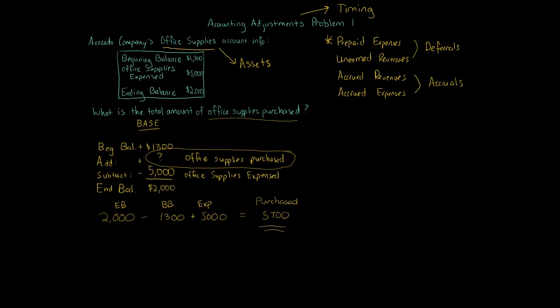Adjustments are about looking at the end of the accounting period and determining what we have. Also, the BASE formula works both ways — if given beginning balance $1,300, ending balance $2,000, and purchased amount $5,700, you can solve for the office supplies expense of $5,000. Make sure you understand: for office supplies, prepaid rent, or prepaid insurance, you can use this type of calculation.